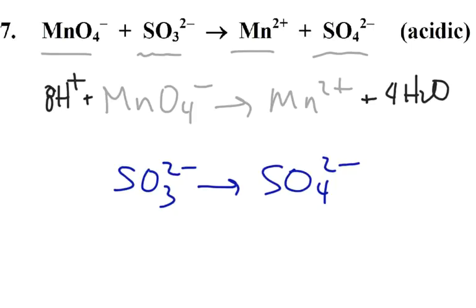Last thing is we want to balance the charge. On the left side, we have eight and minus one, so we have plus seven on the left, plus two on the right. Which side is more positive? The left side is more positive - more positive by five, so we're going to add five electrons to the left side.